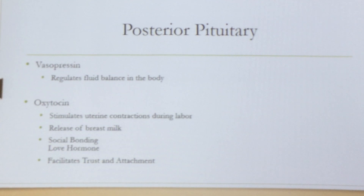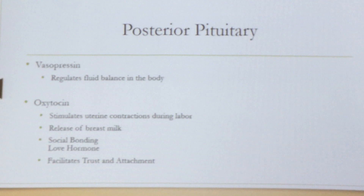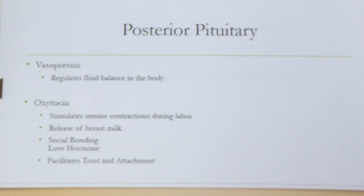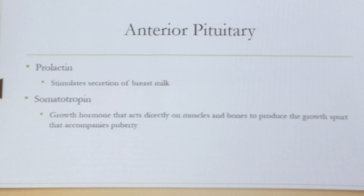This is the first hormone we're going to talk about that is connected to psychology. Oxytocin is the love hormone — it is released especially when you are in hugs, and it is involved in social bonding and facilitating trust and attachment. That's a very good example of why we're studying the endocrine system. Prolactin stimulates the secretion of breast milk. Somatotropin is the growth hormone that acts directly on muscles and bones to produce growth during puberty.